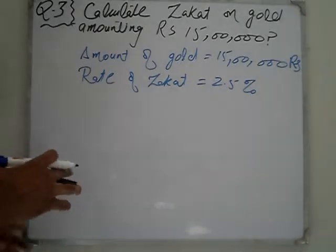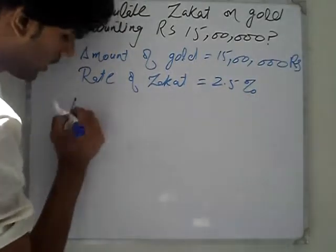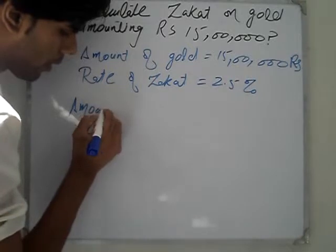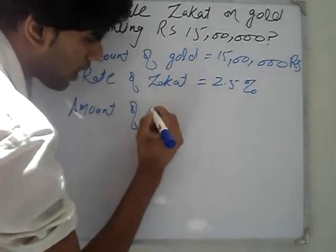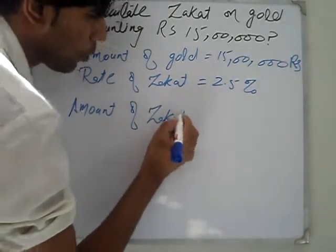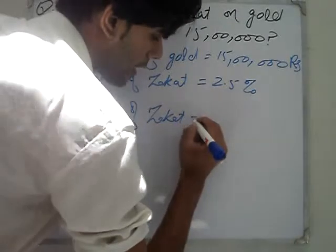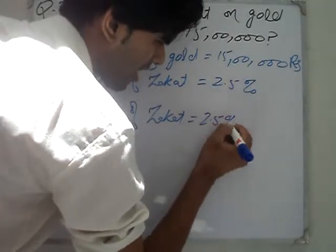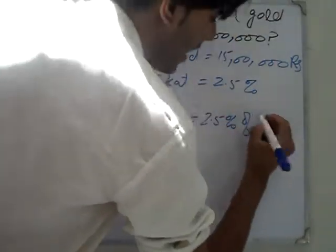Rate of Zakat is 2.5%. Now we find the Amount of Zakat, which is 2.5% of 15 lakh.